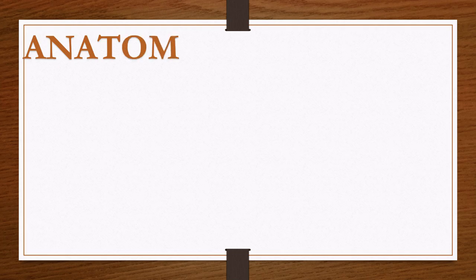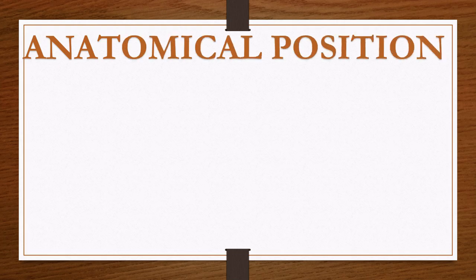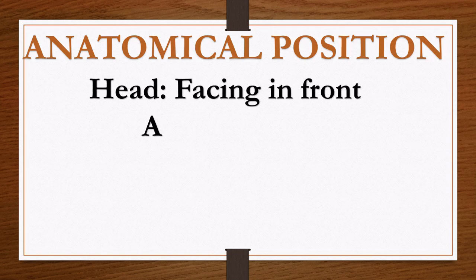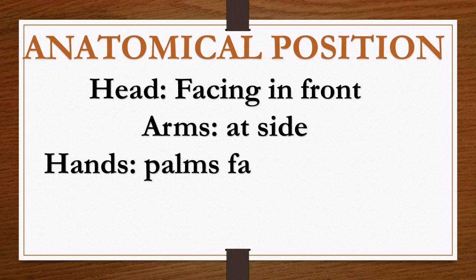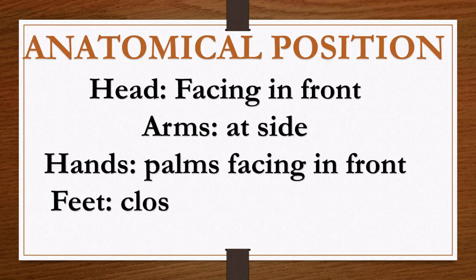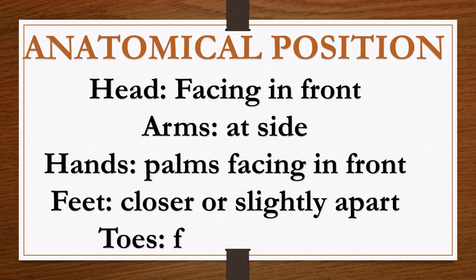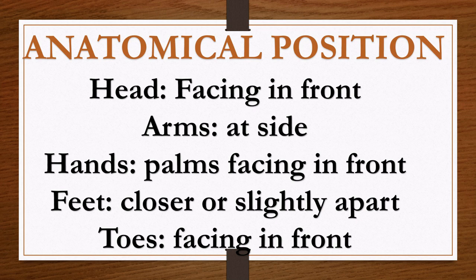Now let's see what we call anatomical position. In anatomy, a person doesn't stand just anyhow — there is a defined anatomical position. Starting with the head: the head has to face in front. Then the arms have to be at the side. The palms have to face in front. The feet have to be close together or slightly apart, and the toes have to face in front. This is the ideal position in anatomy — we call it anatomical position.